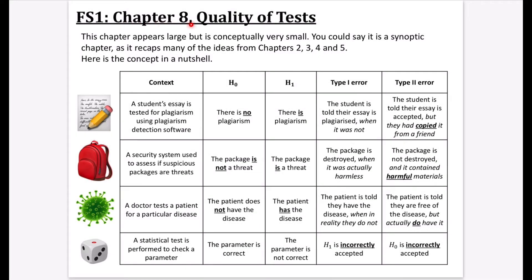We're on to the final chapter of Further Stats, which is chapter 8, called Quality of Tests. Basically, by the end of this chapter, you try and assess whether you think a hypothesis test — like two different hypothesis tests — is the best kind to use.